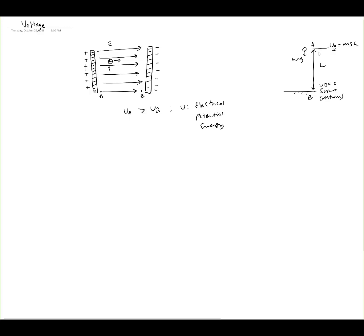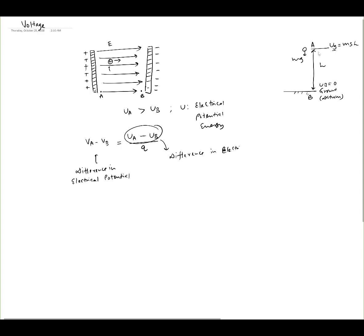The idea of voltage is related to the difference in electrical potential energy. The difference in potential energy going from A to B is uA minus uB. If you divide this quantity by the charge Q, what we get is the difference in electrical potential. So uA minus uB divided by Q gives the difference in electrical potential, while uA minus uB itself is the difference in electrical potential energy.